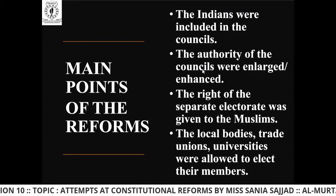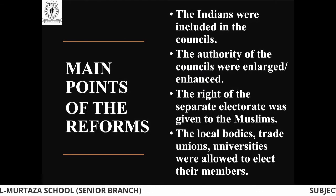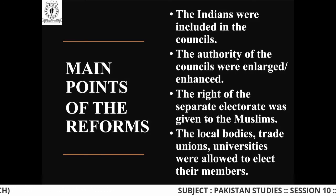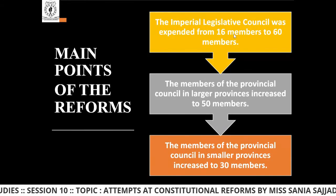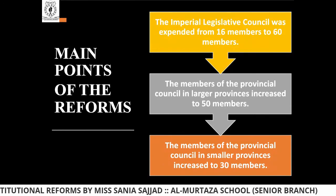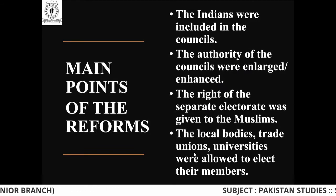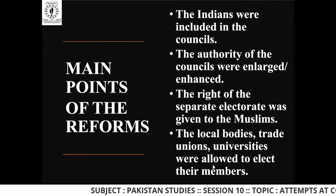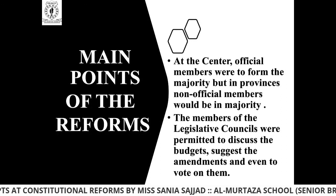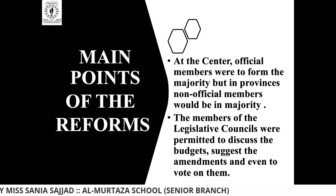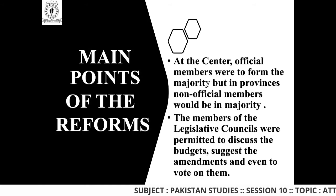Indians were included in the council — the authority of the council was enlarged and Indians were allowed to participate. The right of separate electorate was given to Muslims. As mentioned, when the legislative council increased to 60, Muslims were able to participate. Local bodies, trade unions, and universities were allowed to elect their own members, meaning you could participate in elections and vote for the person you want as the leader of your political party.